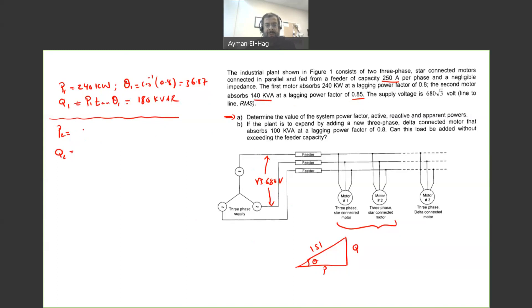So from this, your P will be equal to S2 times cosine of theta 2, which is 140 times the power factor, which is 0.85. And this will give me P2 equal to 119 kilowatt.